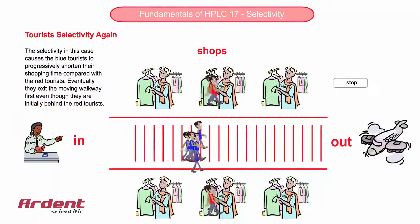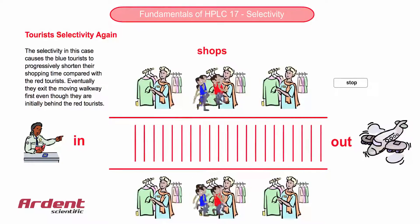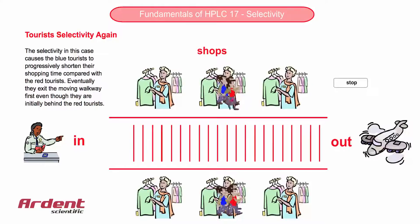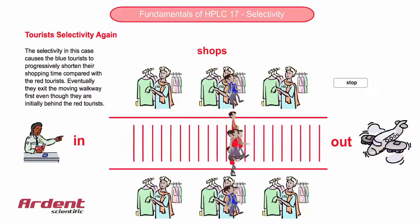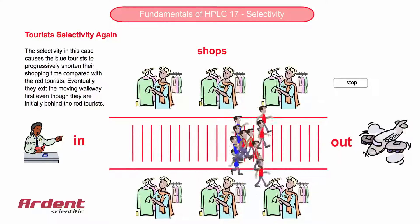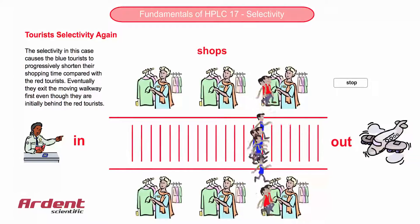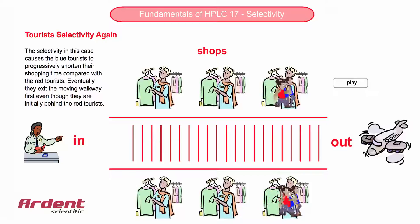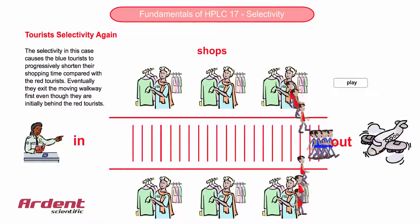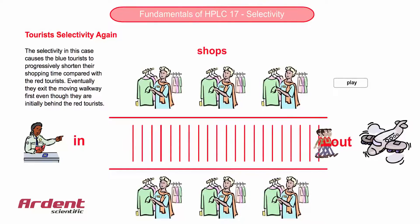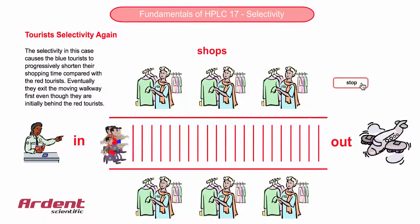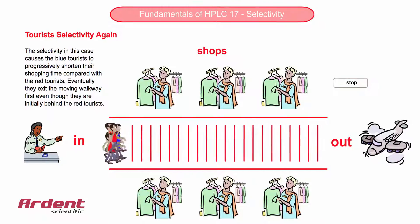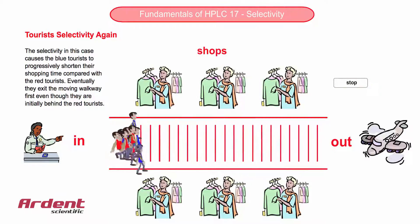You can hopefully see that selectivity, although a little complicated, is also a very powerful feature in separation. In the second module in this series, we shall cover the rules in reversed-phase HPLC, which will help us further understand this effect.